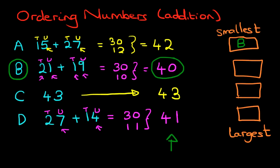Which number comes next? We've got 42, 43, and 41. Those three are left. Well, the next smallest is 41. And that one is D.